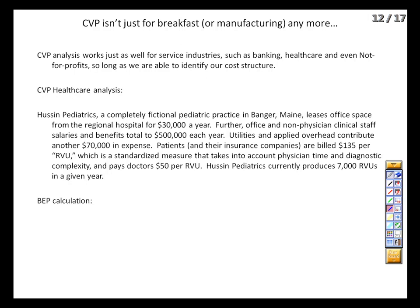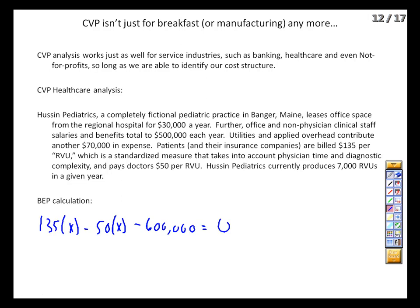Let's take a look at a healthcare business — Huss and Peds, a completely fictional pediatric practice in Bangor, Maine. They lease office space for $30,000 a year, non-physician costs are $500,000, and applied overhead is another $70,000. Patients are billed $135 per RVU, and physicians are compensated on a salary-plus basis, which in practice yields a payment of about $50 per RVU. For break-even: $135 times x minus $50 times x gives our contribution margin. Fixed costs total $600,000. Setting profits equal to zero, they need x equaling 7,059 RVUs to break even. If we substitute their actual 7,000 RVUs into the equation, we find a $40,000 loss.